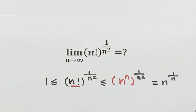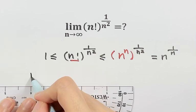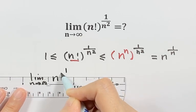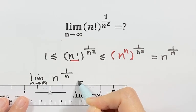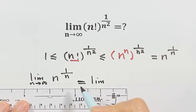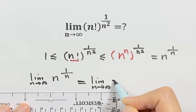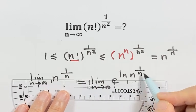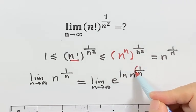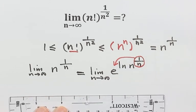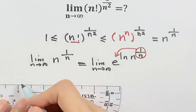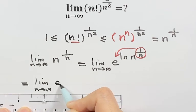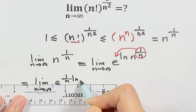So next we have to figure out what this limit is. What is the limit as n goes to infinity of n to the power of 1 over n? First we rewrite this as e to the power of log, then put this whole thing — n to the power of 1 over n — inside. So next we can put the power to the front. And here we have the limit, then e to the power of 1 over n times natural log n.